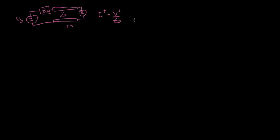One other concept that will come into play: if you have a wave going in the negative Z direction, which I'll call V minus, and you want to find the corresponding current, you not only have to divide it by Z naught, but also do not forget to add the negative sign. So you don't just divide by Z naught — you also have to add a negative sign.